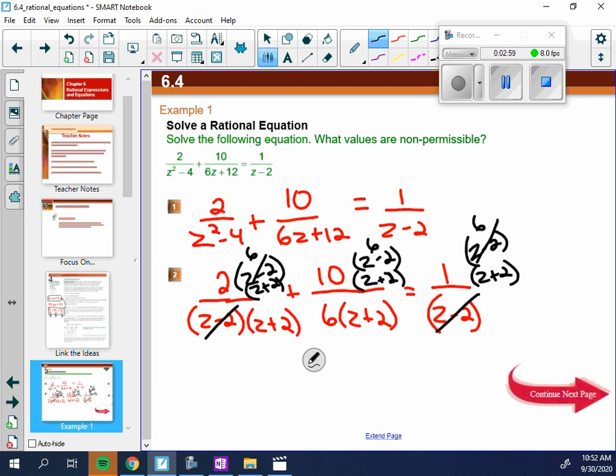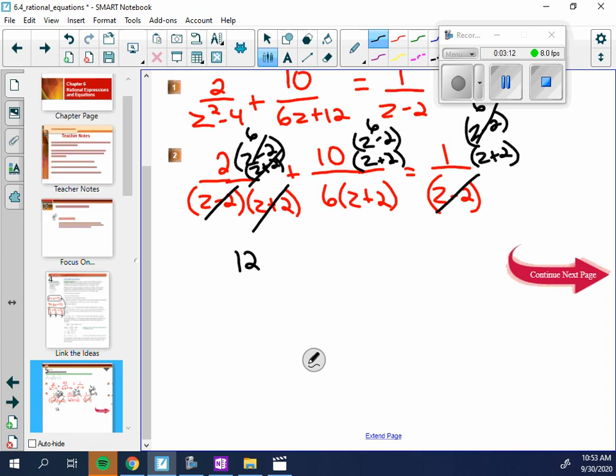So in this first section, the z minus 2 is canceled. But you see how the 6 doesn't. So what do I have left here is 2 times 6, which is 12. Let's look at the second one. The z plus 2 is canceled, and the 6 is canceled. So what am I left with? Plus 10 and the z minus 2. Do you see how that one would be?